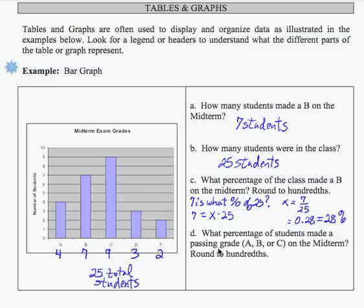What percentage of the students made a passing grade, A, B, or C? Well, if I add up those numbers, I get 7 plus 4 is 11, plus 9. That would be 20.